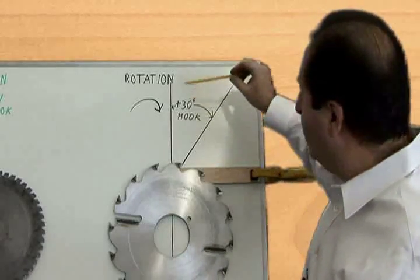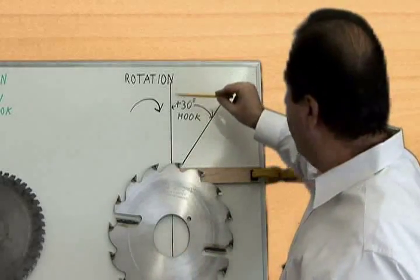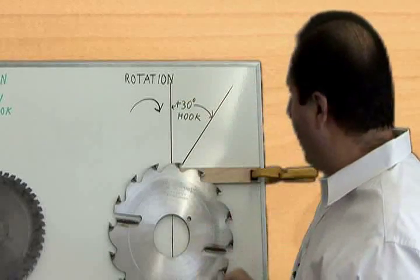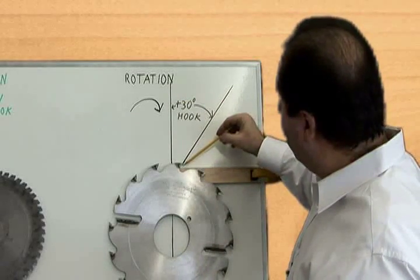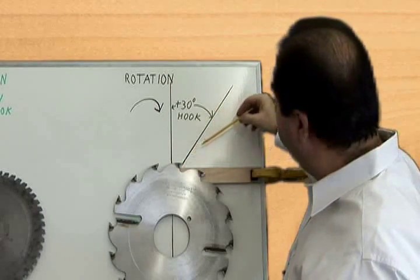The positive hook saw blade: if you take your saw blade and lay it on your desk or workbench and draw a line straight up and down through the saw blade, right down through the center of the arbor, and then you draw another line at the angle that the face of the tooth is at.